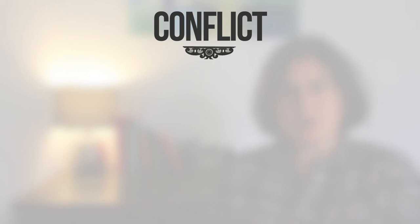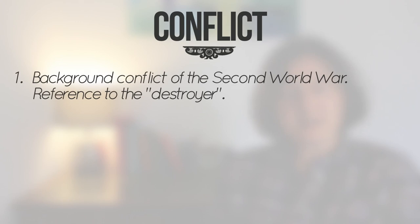Conflict. Several types of conflict feature in the novel. First, there is the external conflict of the Second World War against Hitler and Germany going on in the background, as indicated by the reference to the destroyer on the first page and the references to food being rationed, conscientious objectors, and Hitler's atrocities.